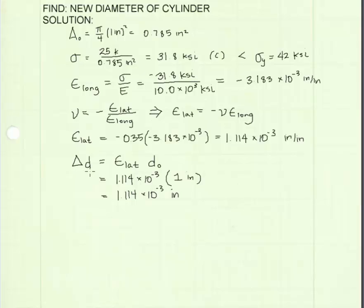And that can be applied to the diameter. We can calculate the change in the diameter is equal to the lateral strain times the original diameter, which is 1 inch. And we can calculate the change in the diameter to be 1.114 times 10 to the negative third inches.